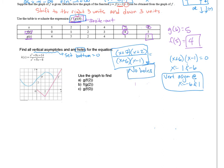Now, for horizontal asymptotes — I didn't ask for it here, but for a rational function you look at the highest powers. Since both numerator and denominator have x squared as the highest power, the coefficient is 1 over 1, giving a horizontal asymptote at y equals 1. If the highest power is in the denominator, the horizontal asymptote is at zero. If the highest power is in the numerator, there is no horizontal asymptote. It's similar to finding limits — just a handy way to memorize it for rational functions.